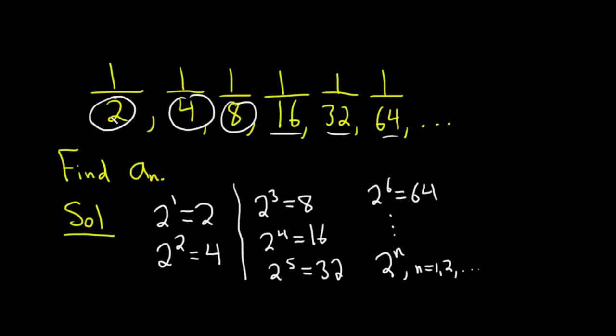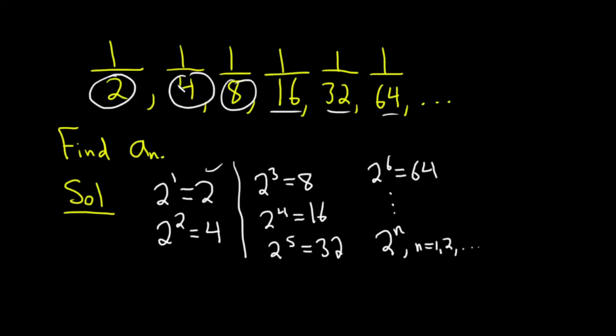Starting at 1, because 2 to the 1 is actually going to give us 2. And in the numerator, we simply have 1. So a formula for a_n in this case will be 1 over 2^n, and that would be the actual answer to the problem.